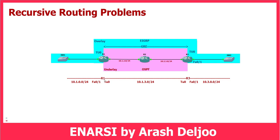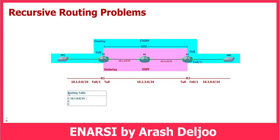Let me show you the routing table of Router1. The routing table of Router1 contains the following information. First, we have multiple connected networks — three connected networks. The first connected network is 10.1.0.0/24, reachable over FastEthernet0/1.